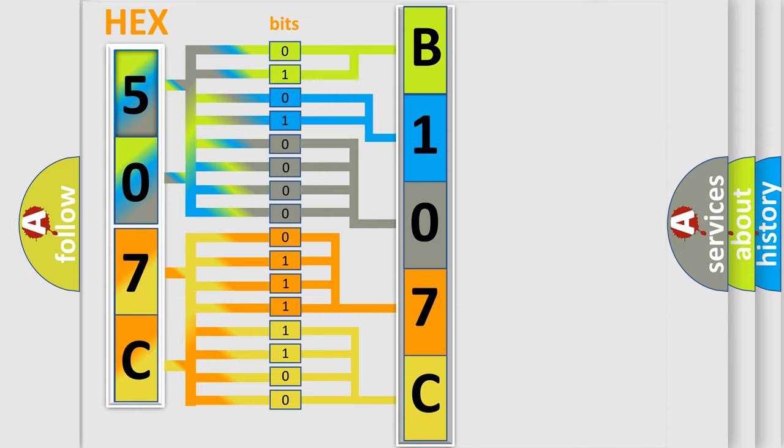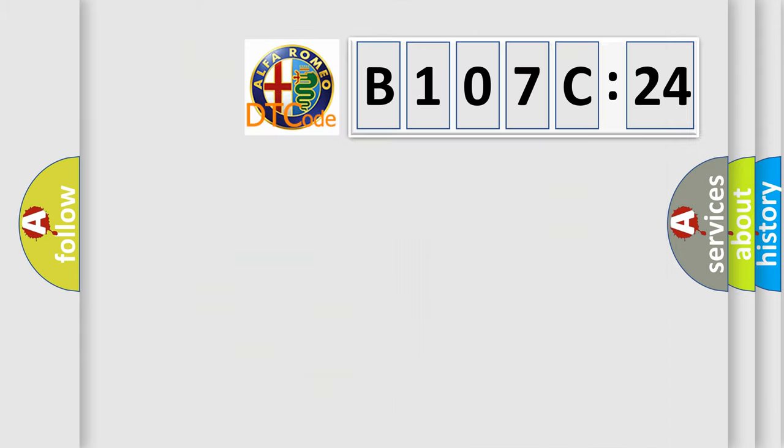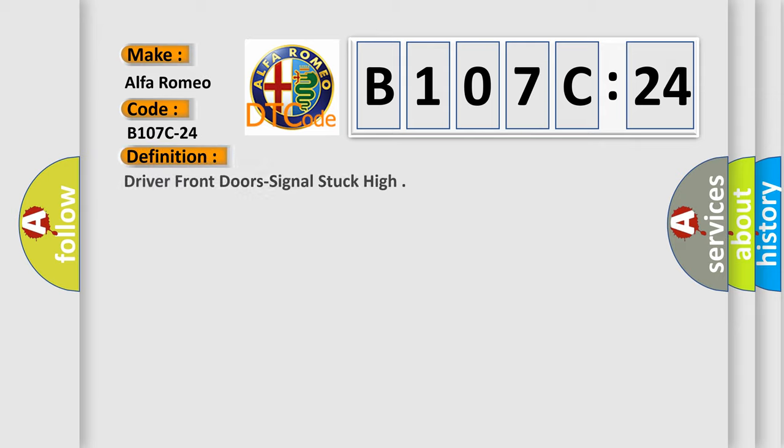We now know in what way the diagnostic tool translates the received information into a more comprehensible format. The number itself does not make sense to us if we cannot assign information about what it actually expresses. So, what does the diagnostic trouble code B107C24 interpret specifically for Alfa Romeo car manufacturers?